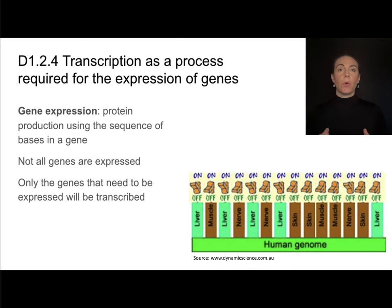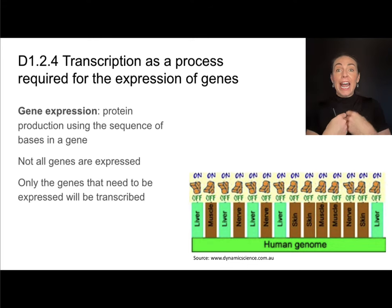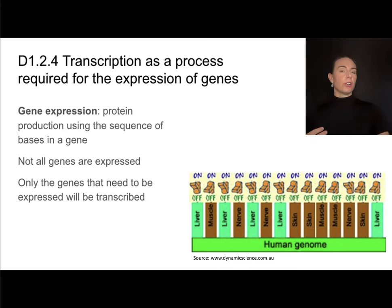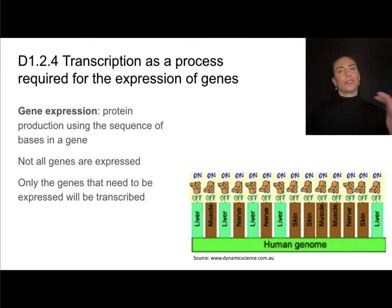Transcription is only going to occur along a small segment of DNA, and that small segment is a gene. Genes code for proteins. Gene expression is the production of a protein using the sequence of bases in a gene. A single cell in your body has lots and lots of genes, but different cells will express some genes and turn other genes off. Cells will only express the genes that are needed at that time. When we say genes are expressed, we mean they are transcribed and then later translated into proteins. For example, in a liver cell,